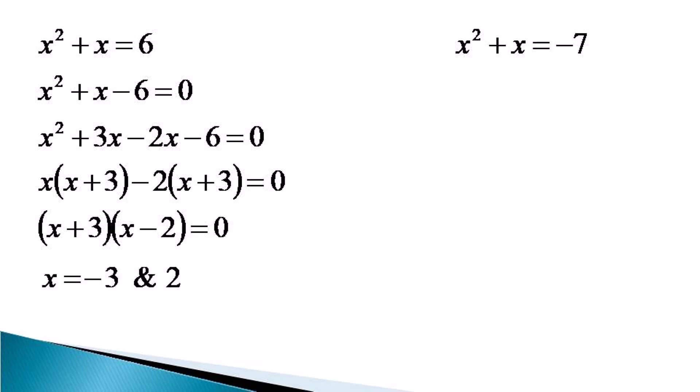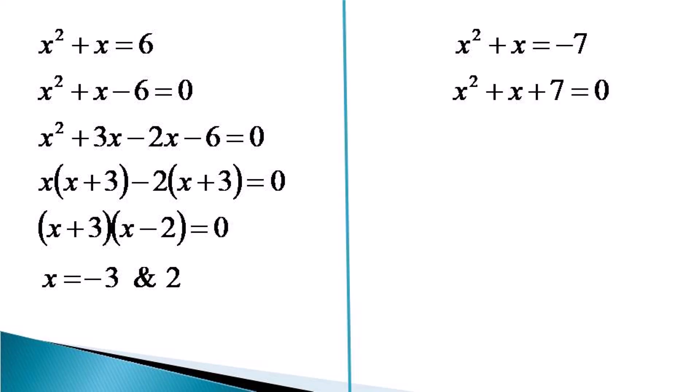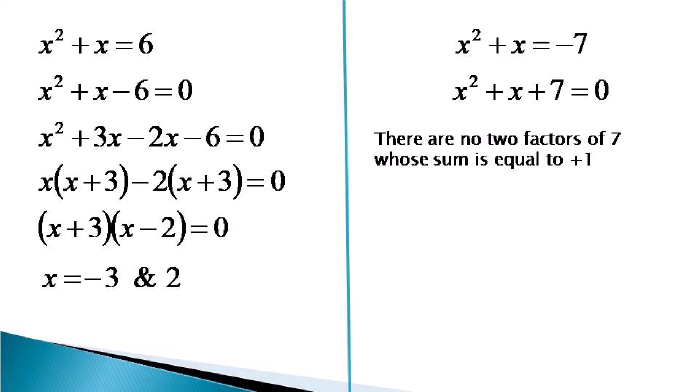We can check that they satisfy the original equation. Now turning our attention to x squared plus x equals minus 7, the equation becomes x squared plus x plus 7 equals 0. If we look and try to find two factors of 7 whose sum is equal to plus 1, we find that there are no such two factors, and thus this equation has no real solutions.